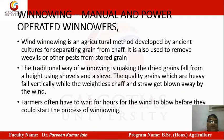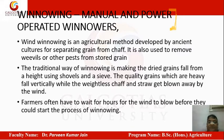Regarding winnowing and manual and power-operated winnowers, agricultural operations can be managed manually, but they are very labor-intensive. In today's world of mechanization, it is not possible to engage so much labor. When working on large volumes and large areas of produce, it is not feasible for a farmer to engage many people, as their speed would also be slow.